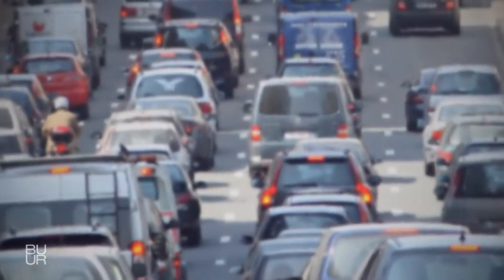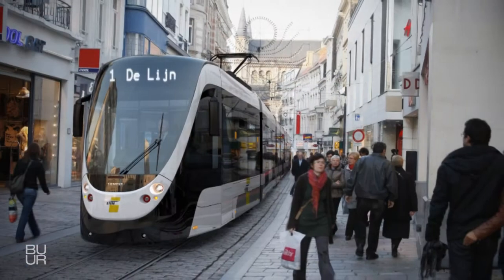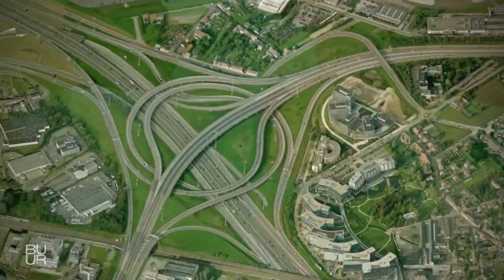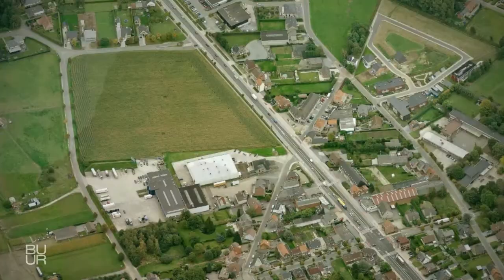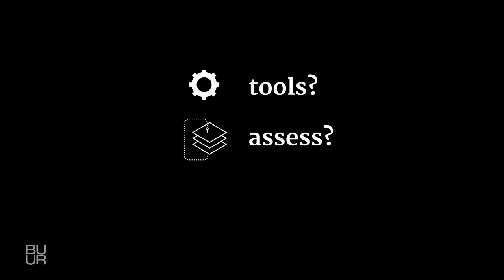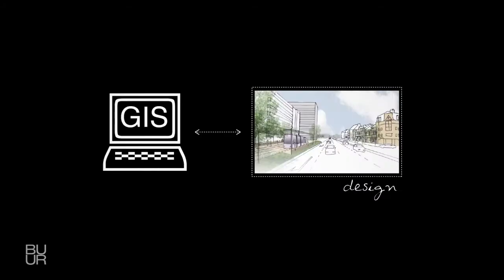Finding the best possible track for tramlines in established urban areas is a challenging task. To find an integrated solution, designers may think of what tools can support the design process, how to dynamically assess the impact of a tramline at different scales, and how to evaluate the impact of a tramline. We developed TramTrackTracer as a GIS design-based tool to address these questions.